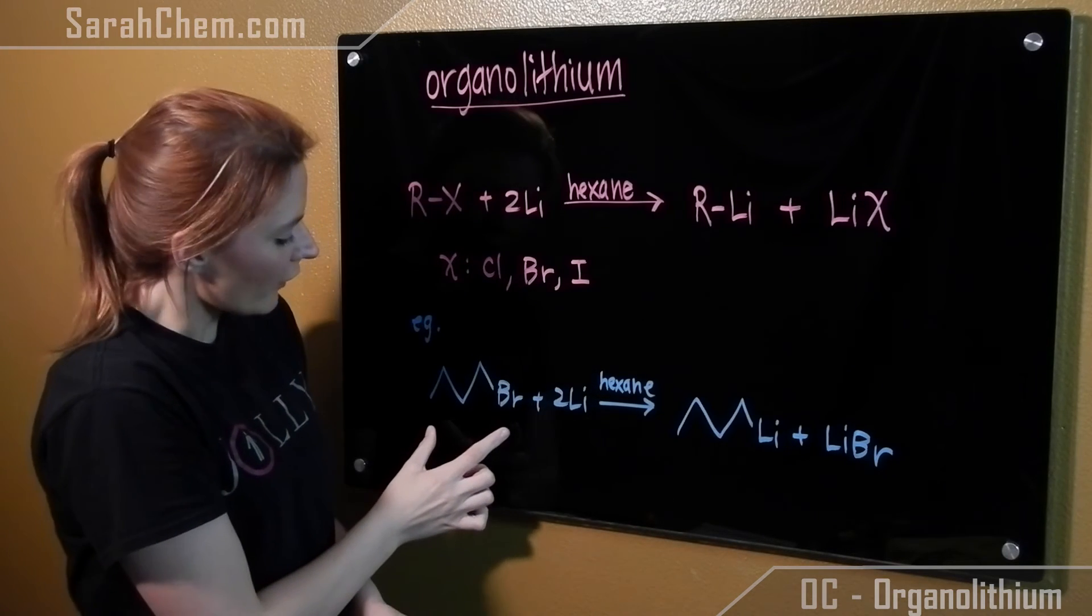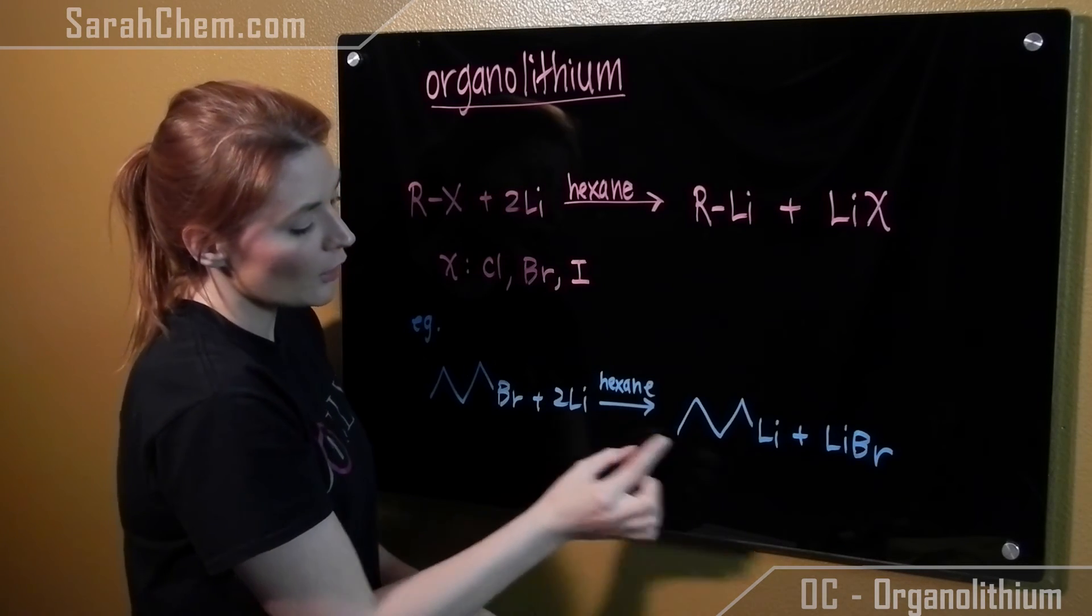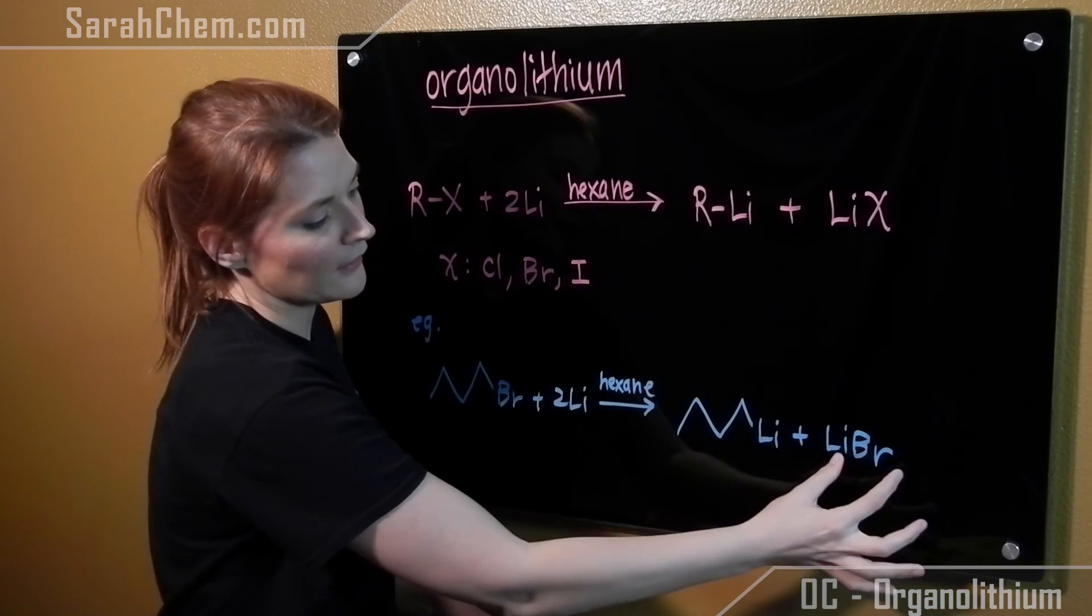So for example, if we have this alkyl halide here with the bromide, and we have the two lithiums in the hexane solvent, we'll get out this organolithium and the lithium bromide there.